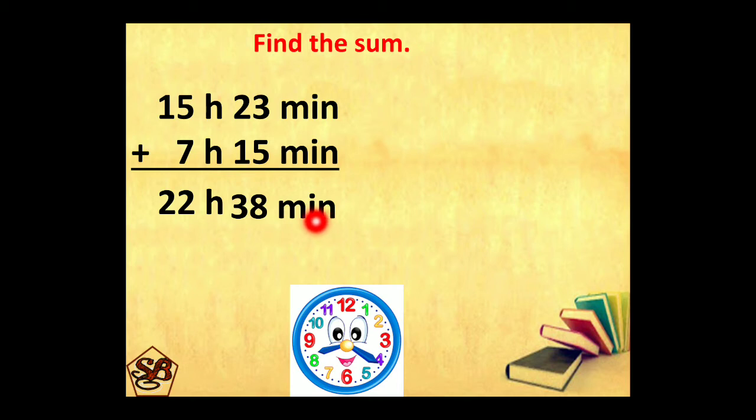Coming to the third step now, that is of regrouping. Regrouping is done when the smaller unit is either 60 or greater than 60. If it is less than 60, then regrouping is not required. So here it is 38 minutes which is less than 60. So this is our final answer.